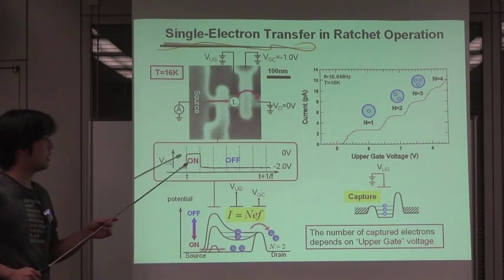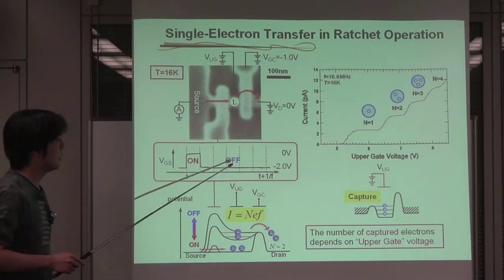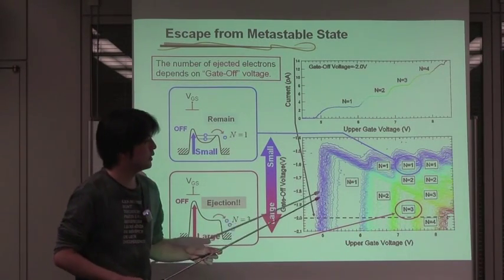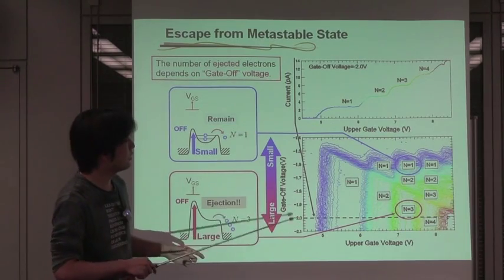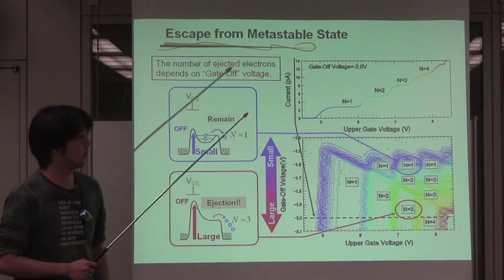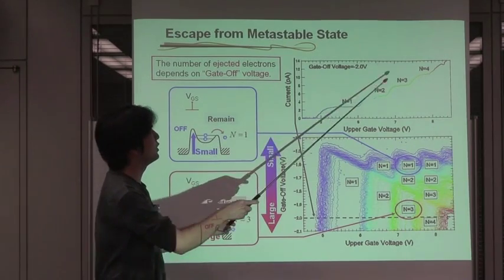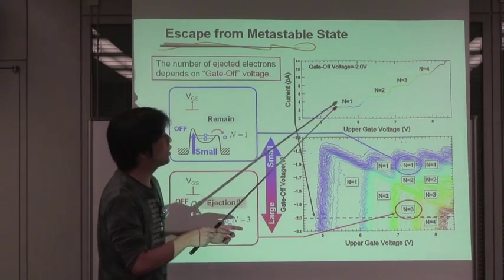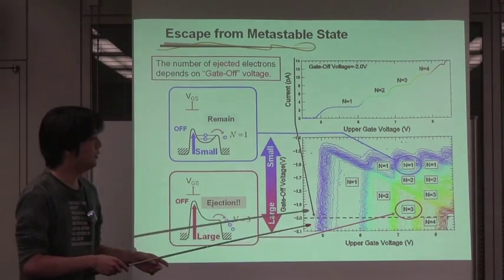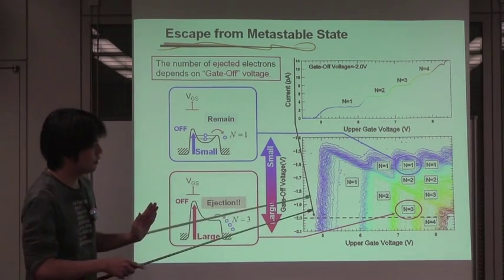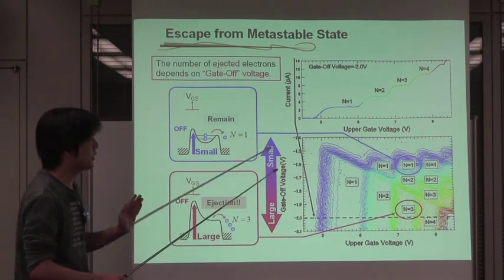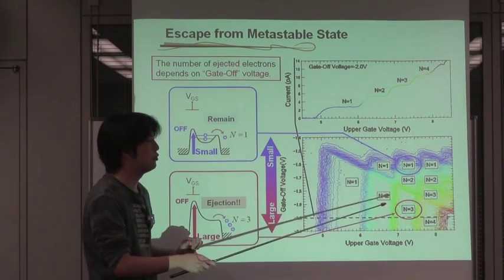In this work, the important parameter is gate-off voltage. This lower figure shows the output current, the contour plot of the output current as a function of the upper gate voltage, and also the gate-off voltage. The rainbow color curve shown before is corresponding to the scan along the dashed line. As I mentioned before, when the upper gate voltage is set to around 7.3 volts, we can trap and prepare the three electrons in the quantum dot.